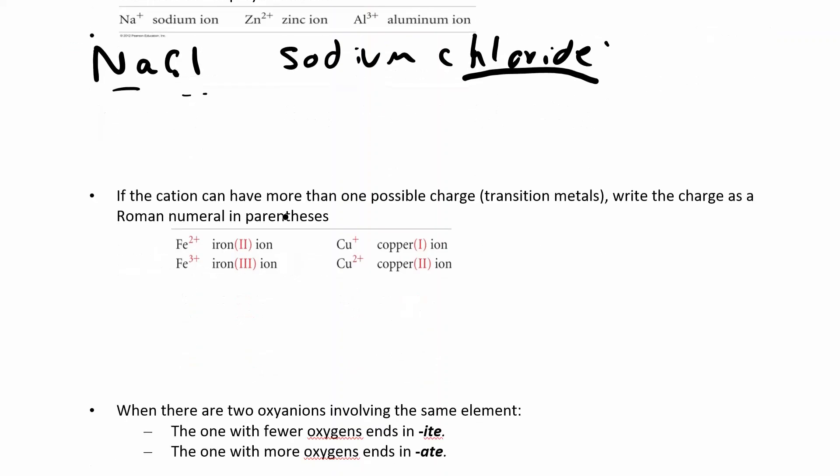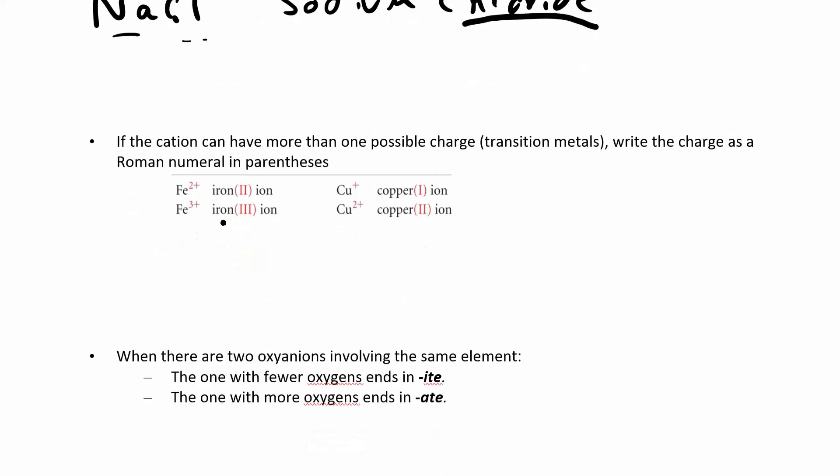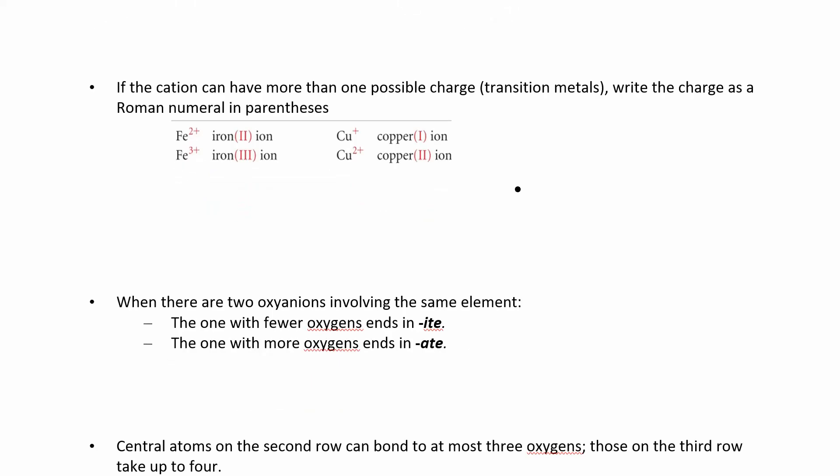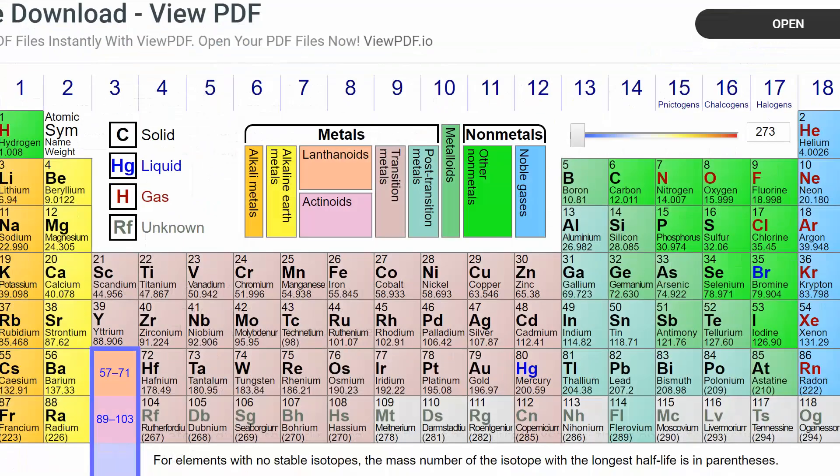Now, some cations don't have fixed charges. Some of these metals will have more than one possible charge. And usually those are the transition metals. So anything in group 1 always has a +1 charge. Anything in group 2 always has a +2 charge. So everything here has a +1. Everything here has a +2. A lot of these ones can change. Not all of them.